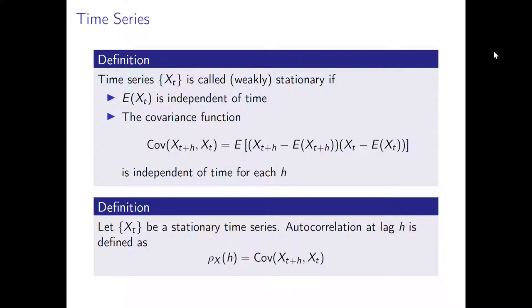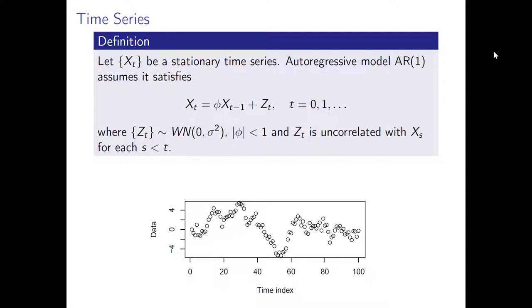Stationary time series can be described by the autocorrelation function. It is defined for lag h as the covariance between time moment t and t plus h. Lag is the fixed amount of time that has passed. One specific autoregressive model we look at is AR1. We assume the time series is stationary and at each timestamp the time series is a constant times the previous time moment, plus a normally distributed random variable with zero mean.